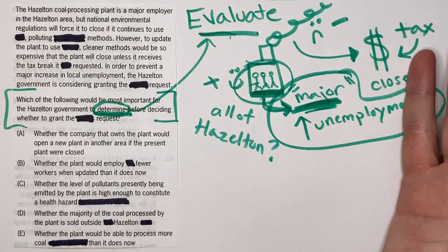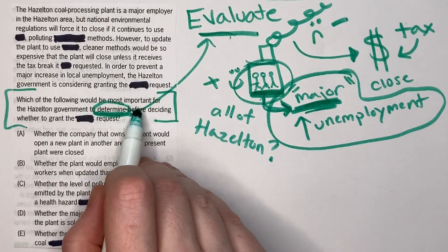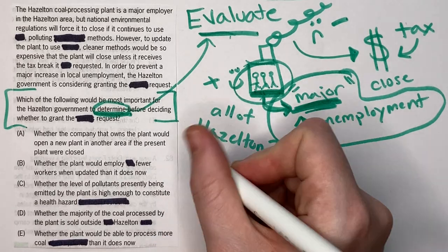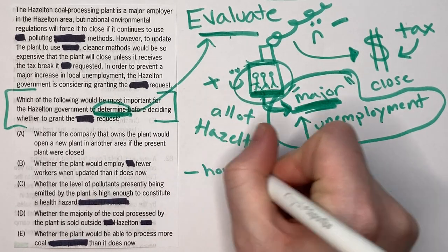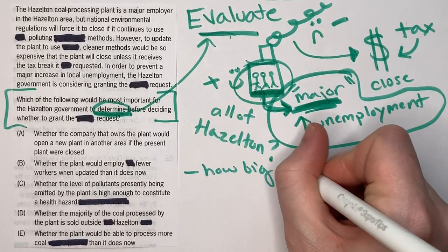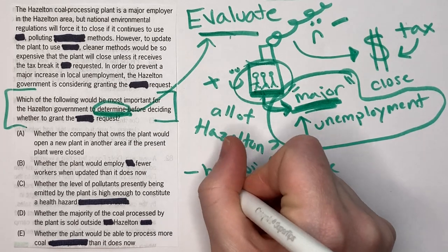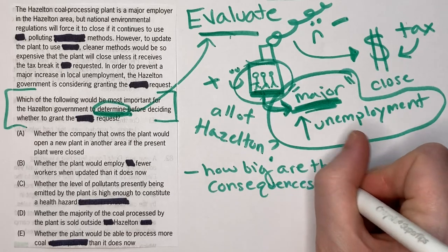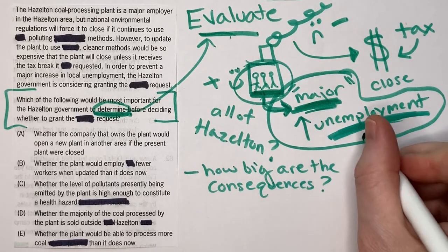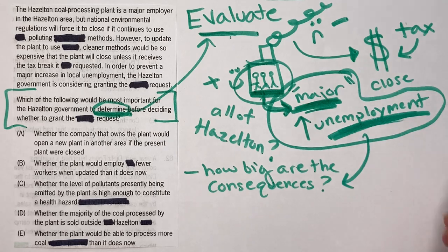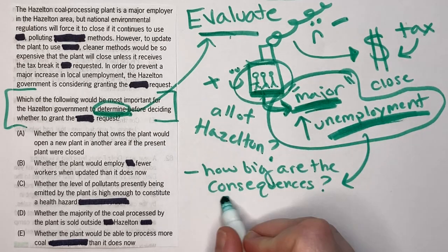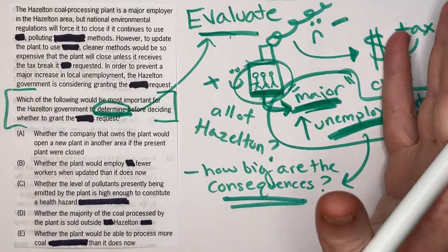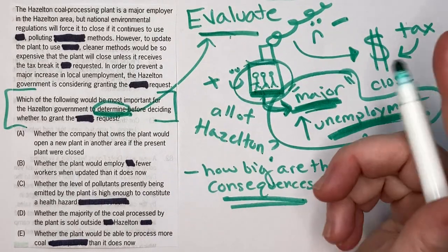Our prediction: the question asks what the Hazleton government should determine before deciding whether to grant the request. The answer should address how big the consequences are — specifically the unemployment consequences, not the pollution consequences. How bad is it going to be? That's really what they need to consider.